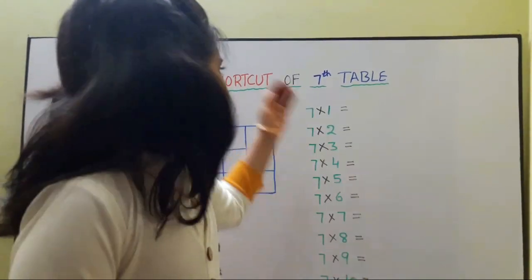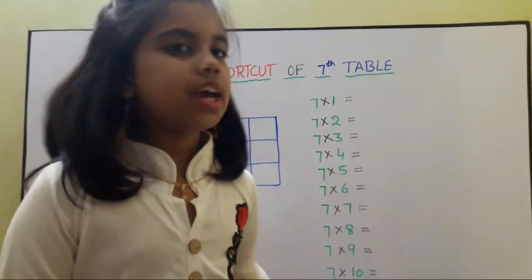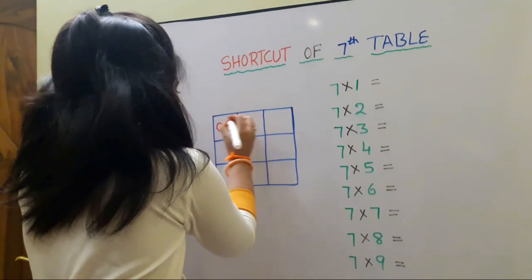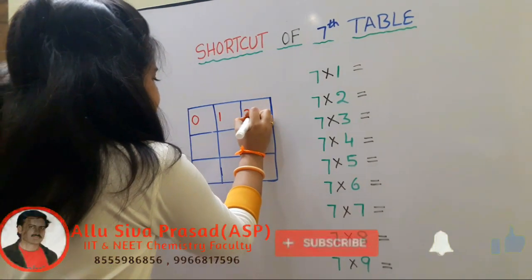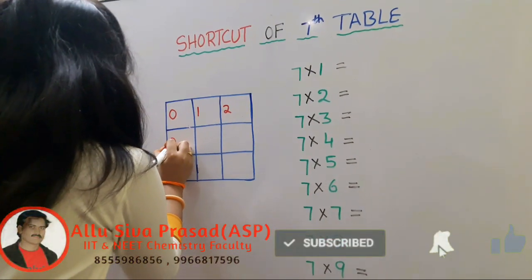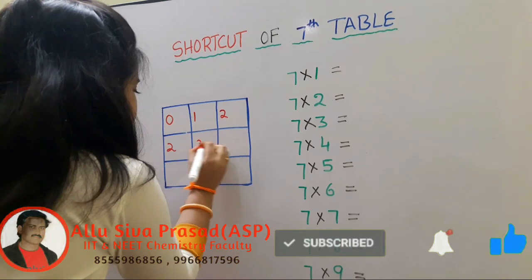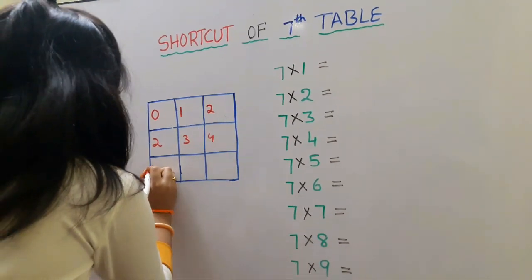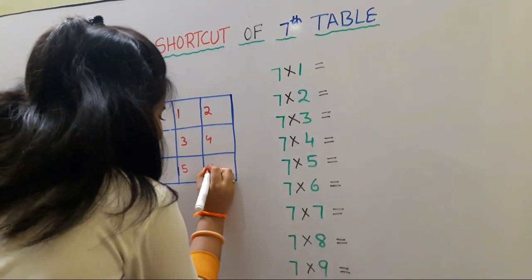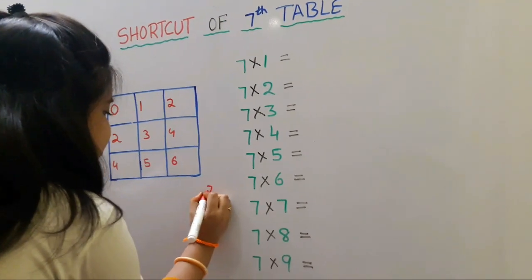Next, I'm explaining the shortcut for the seventh table. We should write 0, 1, 2. Again we should write 2, 3, 4. Again we should write 4, 5, 6. Here we should write 7.